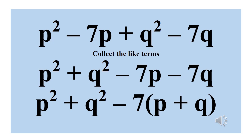Now we factor out the 7 from 7p and 7q since 7 is common, giving us minus 7 into bracket p plus q. We change the minus to plus because of the bracket — if you expand it again, minus times plus gives us minus back. So we have p squared plus q squared minus 7 into bracket p plus q.